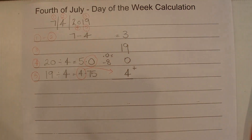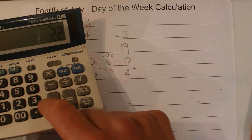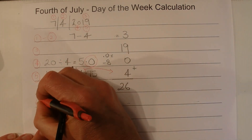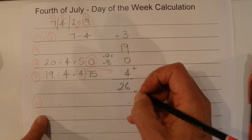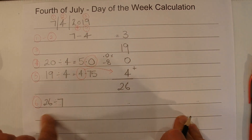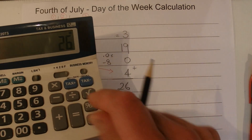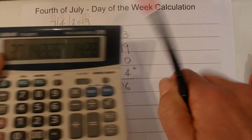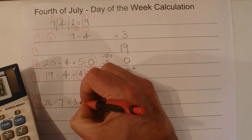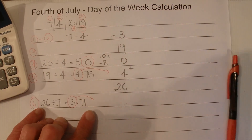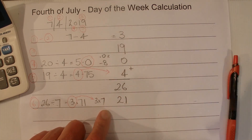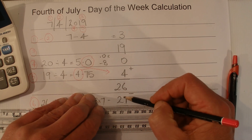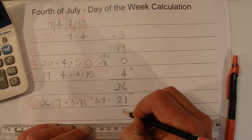So we've got four numbers to add together: 3 plus 19 plus 0 plus 4 equals 26. Then in step six we divide that 26 by 7 and find out what the remainder is. 26 divided by 7 gives us 3.71. We're only interested in the 3, so we take 3 across and multiply: 3 times 7 is 21. Then we find the difference between 26 and 21 — 26 minus 21 equals 5.